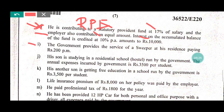The government provides the service of a sweeper at his residence paying rupees 200 per month. So the sweeper salary is 200 into 12. Any benefit given by the employer to the employee is considered as salary, so this is also included in salary.